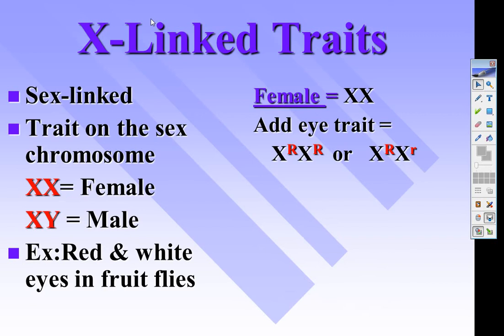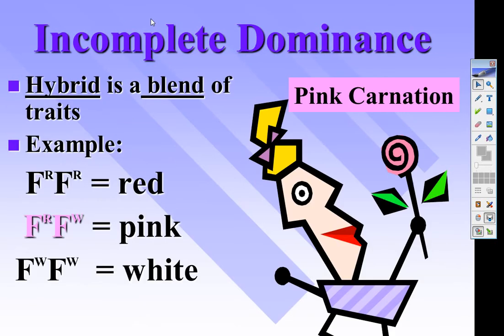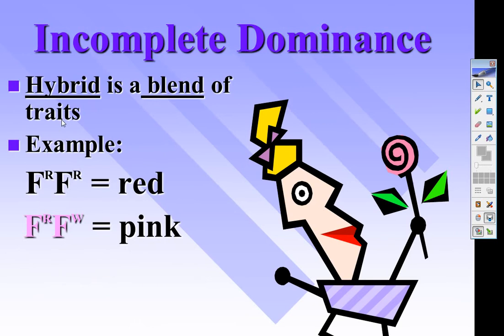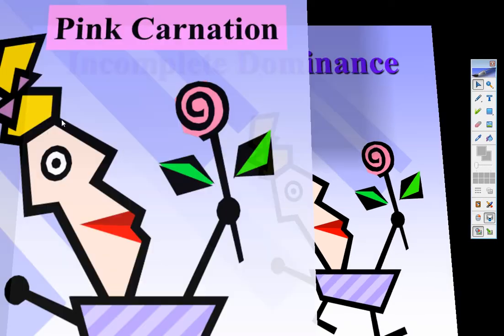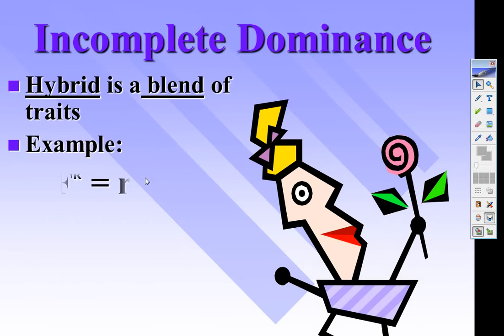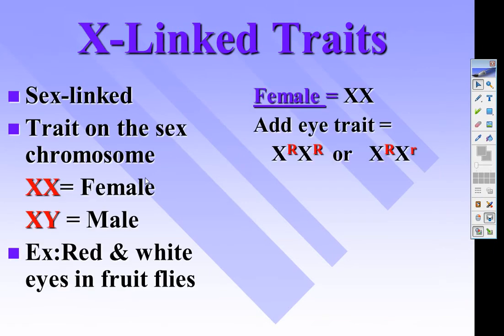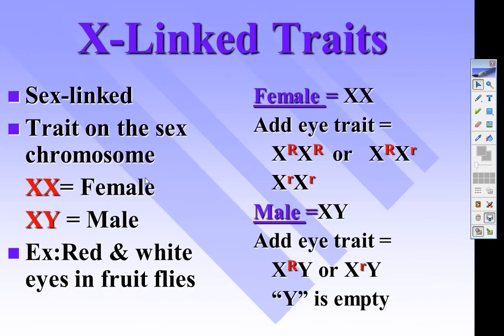To remind you, we write the genotypes differently for codominance, incomplete dominance. Notice the alleles have an exponent. Regular or dominant recessive patterns don't have that, so that's one of the reasons why we can know what type of cross we're doing. If it's a big letter or little letter, you know you're doing sex link, regular dominance. If you have a letter with an exponent and no X or Y, you're doing incomplete dominance.